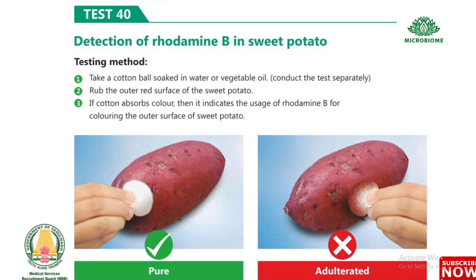Test 40: Detection of rhodamine B in sweet potato. Take a cotton ball soaked in water or vegetable oil and rub the outer red surface of the sweet potato. If the cotton absorbs color, it indicates the use of rhodamine B for coloring the outer surface of the sweet potato.